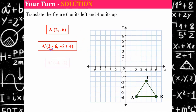Doing that algebraically: two subtract six is negative four, and negative six add four is negative two. So my new vertex should be A prime at (−4, −2).